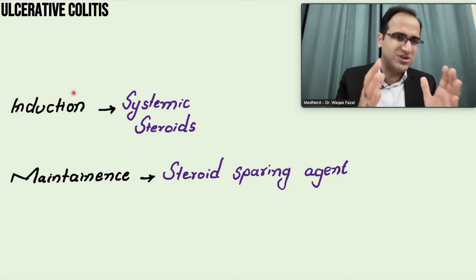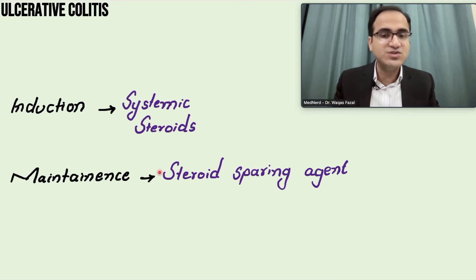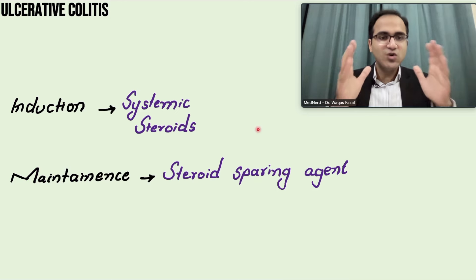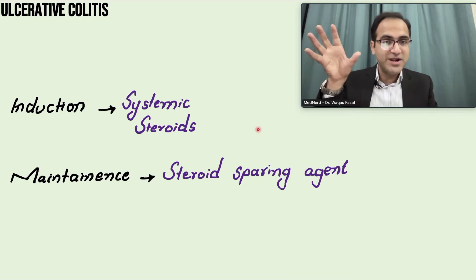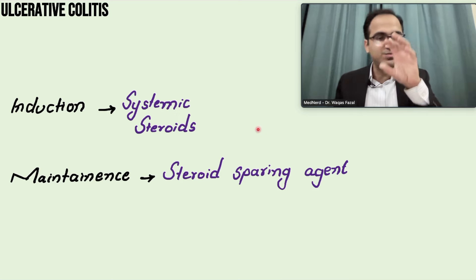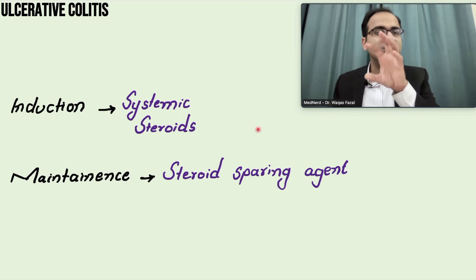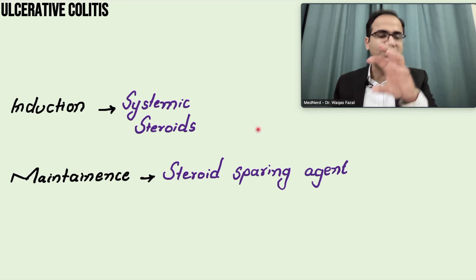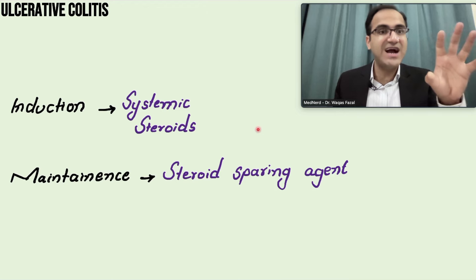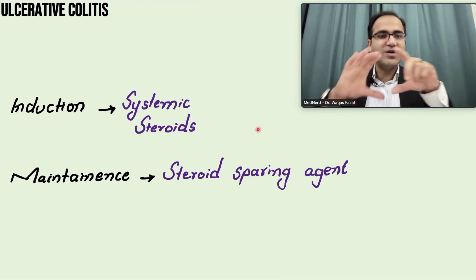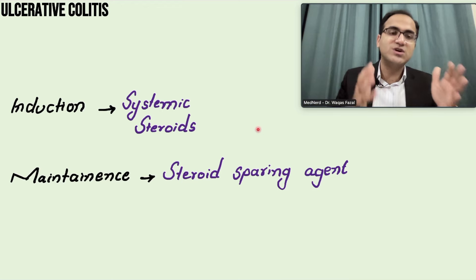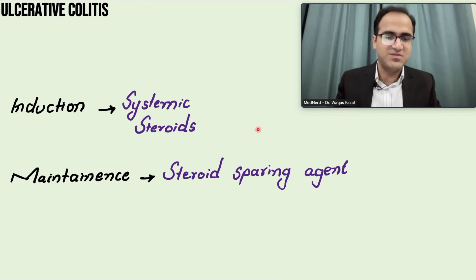For induction, systemic steroids can be used. For maintenance, you must use steroid-sparing agents like mesalamine. In patients with mild to moderate disease, mesalamine and rectal mesalamine are first-line. In moderate to severe, oral corticosteroids are used. In severe ulcerative colitis, IV methylprednisolone is used. Once the patient is out of exacerbation, shift to a steroid-sparing agent like mesalamine only.